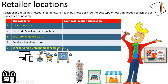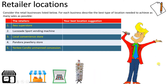For Task 1 — retailer locations — consider the retail businesses listed in the table and describe the best type of location to achieve as many sales as possible. You have five businesses. First, IKEA superstore: think about where they are, what they're near, what's next to them, and what's in front of them. Second, a Lucas Age Sport vending machine: think about where they might be, why they're there, and why they use a vending machine format.